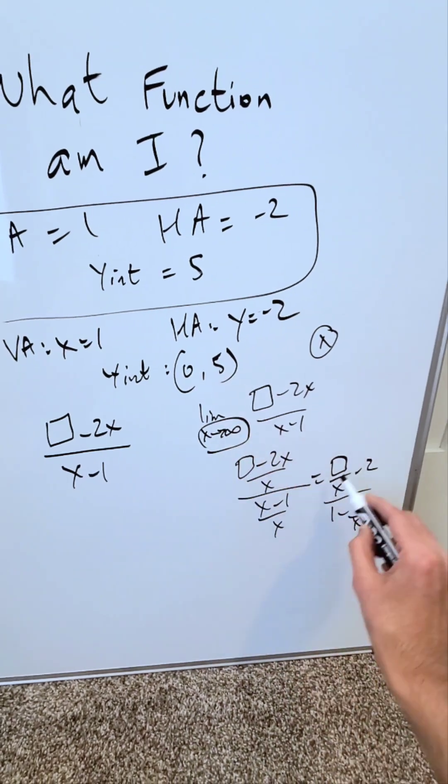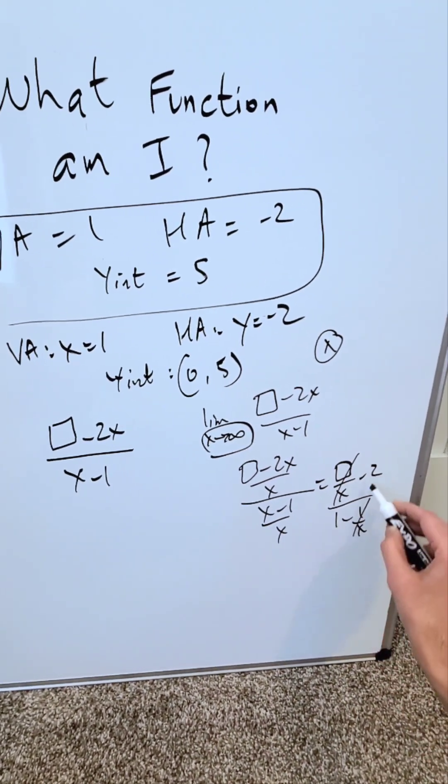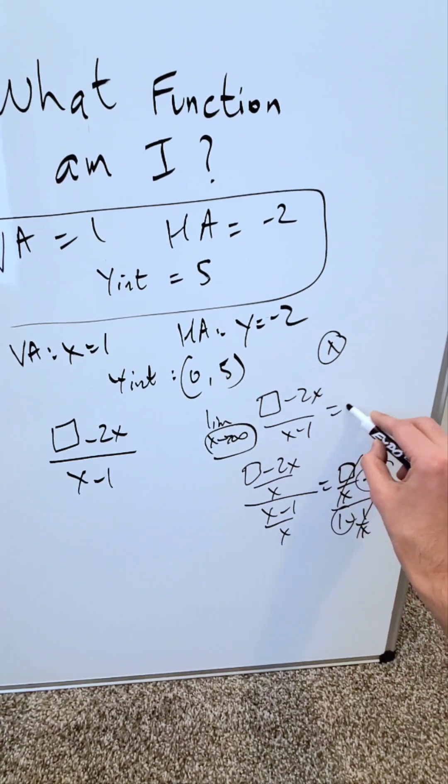Limit as x approaches infinity, these would zero out. I'd be left here with my limit and result which would be a minus 2 over 1 which would be a minus 2.